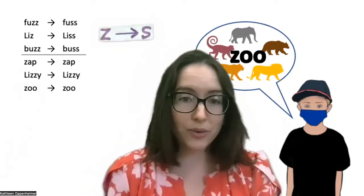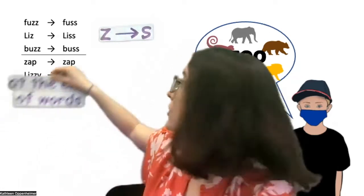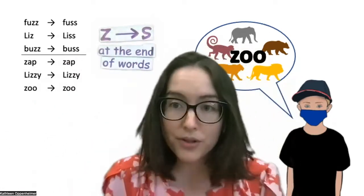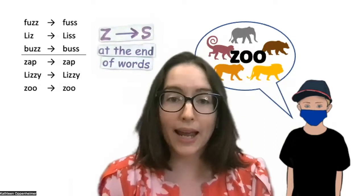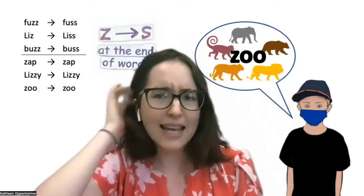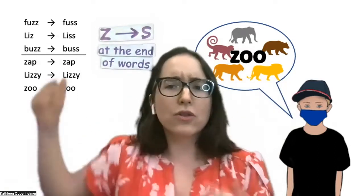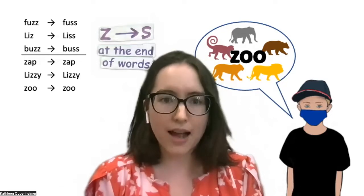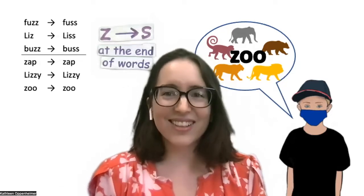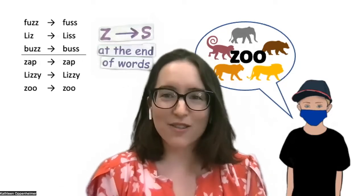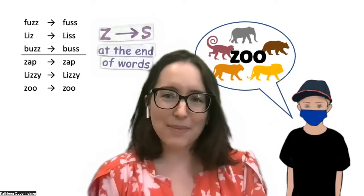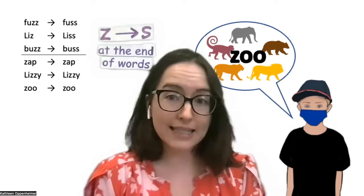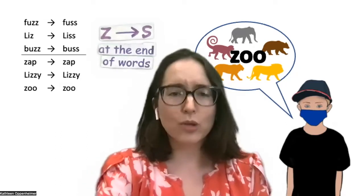So now our new hypothesis is that Z turns into S but only at the ends of words. Okay, so what's next? Well, we have this great hypothesis about the Z sound, but there are a lot of other sounds in the English language. And so part of being scientists is that we want our hypotheses to be thorough and complete, so we want to look at some other sounds too.